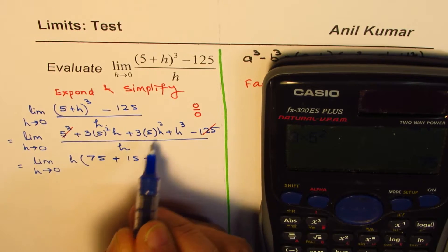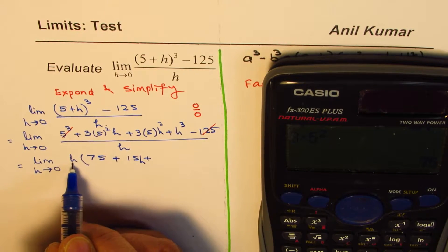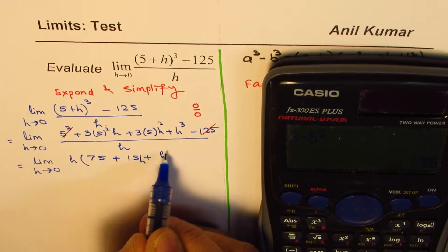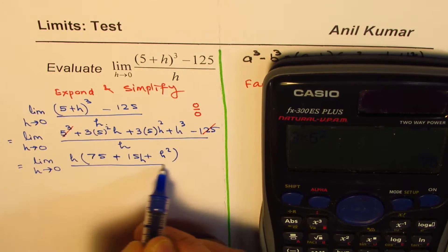Well, let's do 3 times 5 square equals to 75. So, we get 75 here plus 3 times 5, 15, plus, I mean, h also because we have factored only h, and plus h square, right, divided by h.